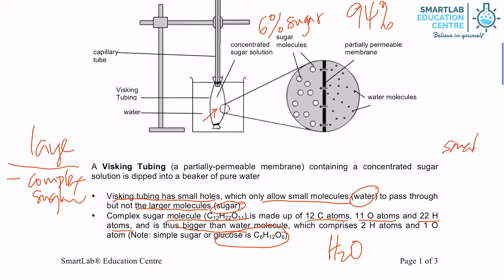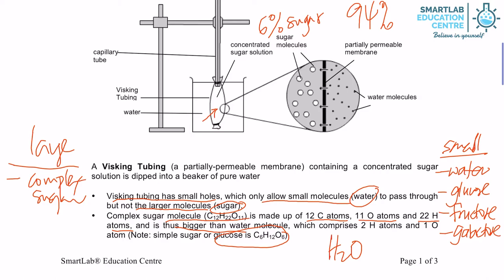Water can pass through, and glucose can pass through. All types of simple sugars — like fructose and galactose — can pass through. On the other hand, sucrose and starch cannot pass through. If you have a salt solution, salt is also too large to pass through the partially permeable membrane.